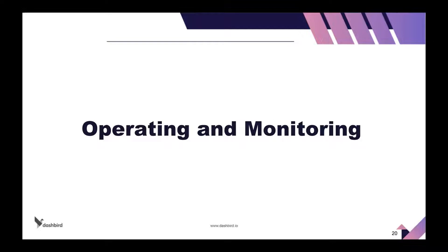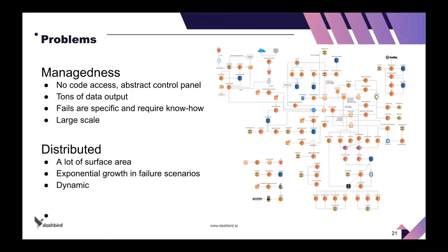Let's jump into the operating and monitoring part of the talk. There are two basic properties that make serverless so hard to monitor. First, modern cloud applications are managed — you don't have code access to a lot of your services. You can't attach an agent to API Gateway and send a failure alarm. That makes you stuck with an abstract control panel to control your application. The other thing is tons of data output — even a small architecture with 50 resources produces logs, metrics, tracing data, and configuration data for all of them.